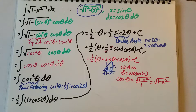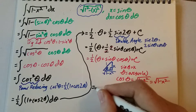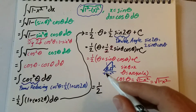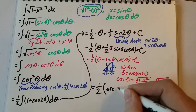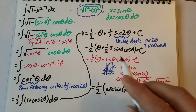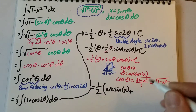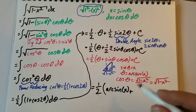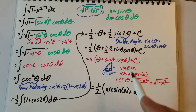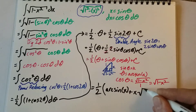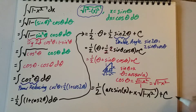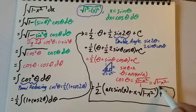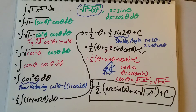Now we plug everything in to get our final answer: one half times arcsine x, plus sine theta — which is x — times cosine theta — which is the square root of 1 minus x squared — plus c. And that is our final answer to this trig substitution integral.